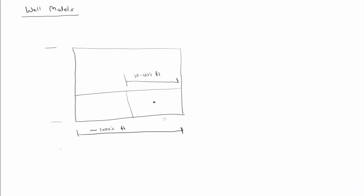The centers of the grid blocks are really the only places where there's any data — pressures and whatnot. We interpolate in between, but we interpolate technically with piecewise constants in the finite difference scheme that we've been talking about.